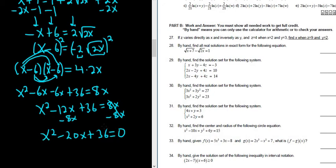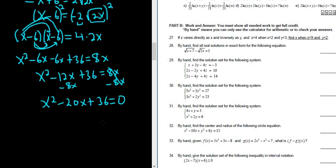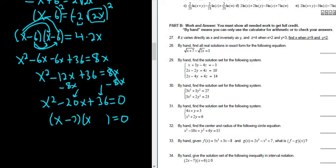If you get to this point, it should factor — if it doesn't, there's a mistake somewhere. These problems are rigged to give nice answers. We need two numbers that multiply to 36 and add to negative 20. That's negative 2 and negative 18, so we get two possible answers: x equals 2 and x equals 18.